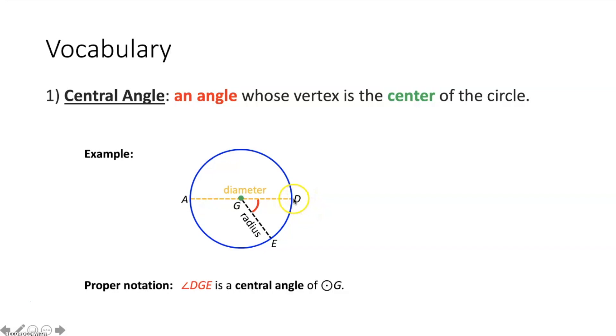This angle right here, angle D, G, E. We know it's a central angle because it's an angle whose vertex, point G in this case, would be the center of the circle.